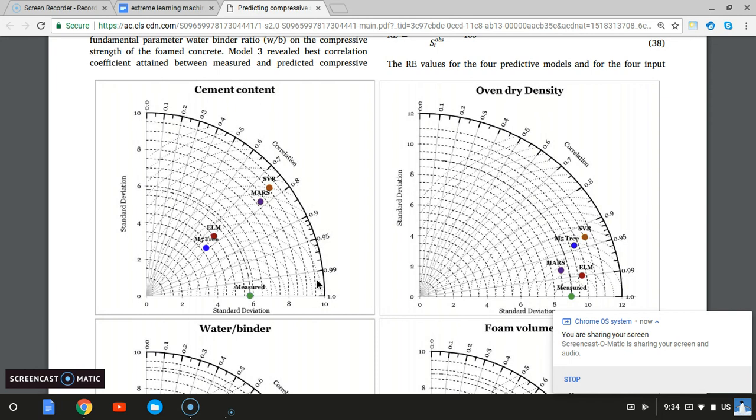Correlation is on this axis. Let's say for SVR, the standard deviation of the predicted points is 9. So you go to 9.